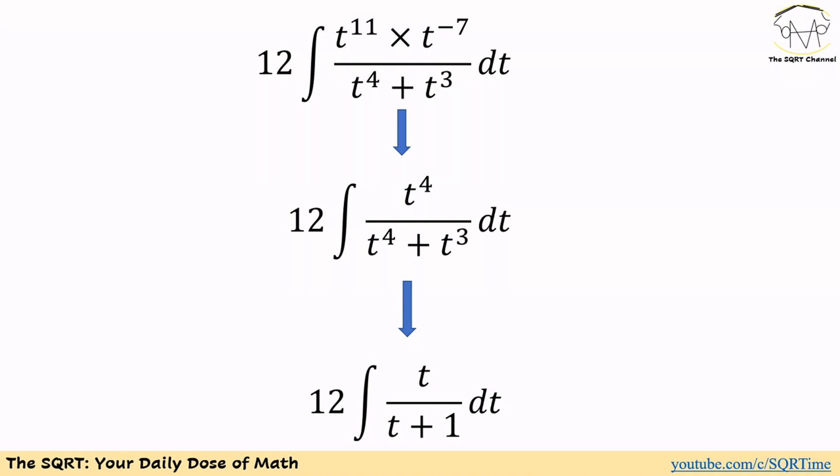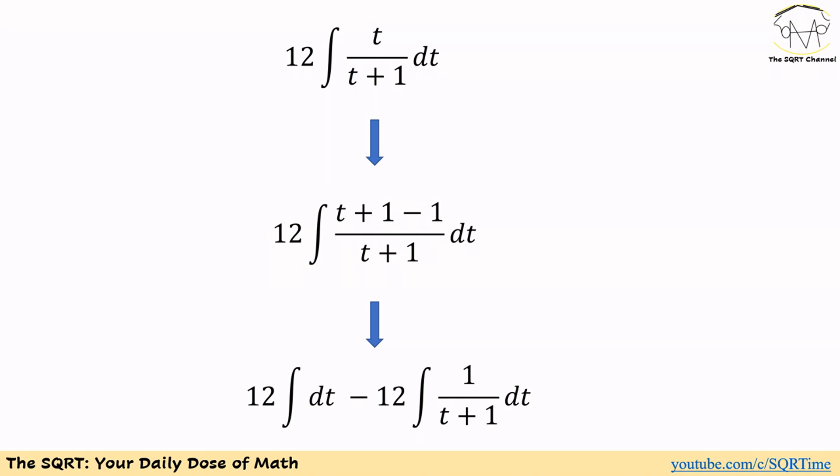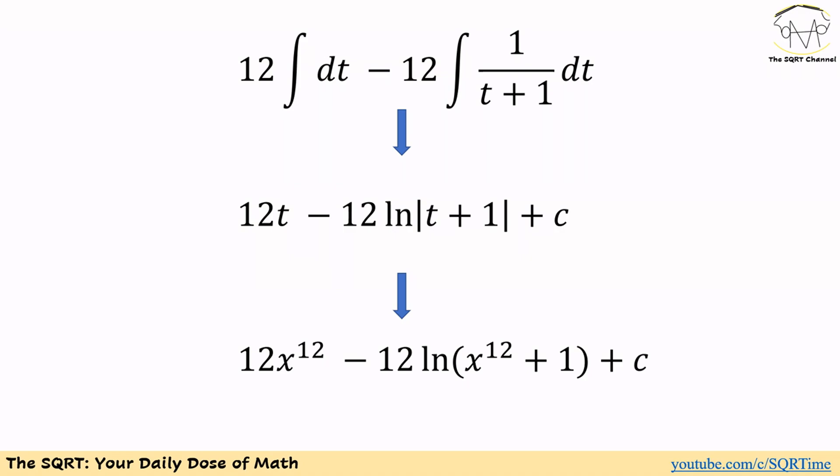We remove t^3 from the top and bottom of the fraction, giving 12 times the integral of t dt over (t plus 1). To solve this, we add and subtract 1 from the numerator and split into two integrals: the integral of dt and the integral of dt over (t plus 1), both multiplied by 12. This gives 12t minus 12 ln of the absolute value of (t plus 1), plus constant C.